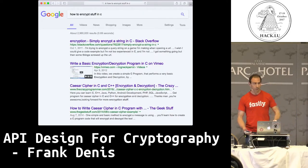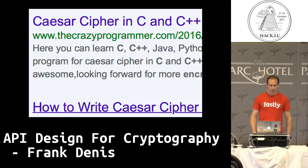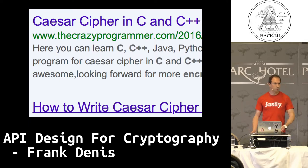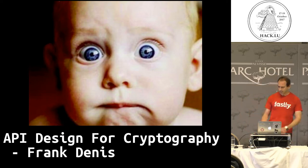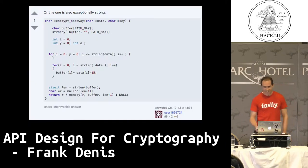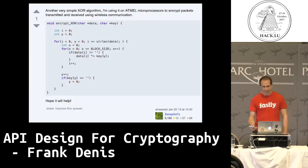So where do you start? Probably with Google — 'how to encrypt stuff in C.' I tried this a couple weeks ago preparing this presentation, and wow, about three million results. From the first page: the Caesar cipher and the Vigenère cipher. These are pretty interesting ciphers with pen and paper, but they don't provide any security whatsoever. Also on the first page: Stack Overflow — 'you can use a variant of base64 with a custom alphabet.' Next — 'this one is exceptionally strong,' but half of it doesn't do anything. The function requires a key but doesn't even use it. That's terrible.